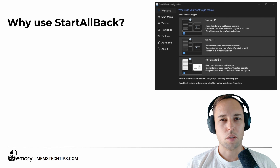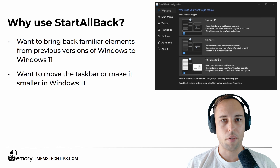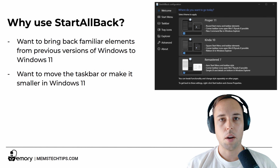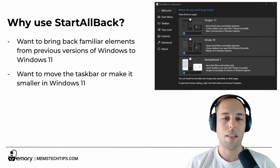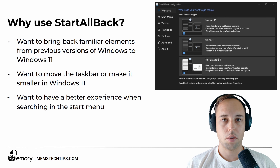So why would you want to use StartAllBack? Well, if you wanted to bring back familiar elements from previous versions of Windows to Windows 11, if you wanted to move the Taskbar or make it smaller on Windows 11 — because you can't do that natively in the latest versions of Windows 11; Microsoft removed that ability in one of the updates — and if you wanted a better experience when searching in the Start menu, because the Windows 11 default Start menu search can be quite slow sometimes.